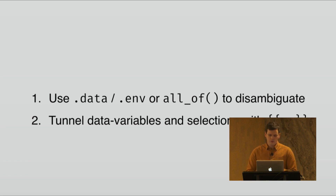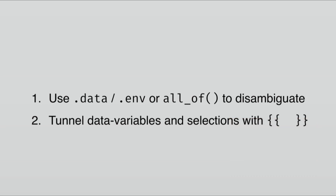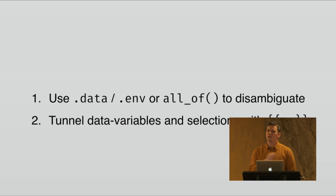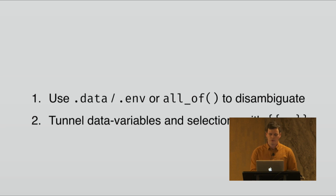So, those are the new features. To summarize: if you want to disambiguate data variables from environment variables, use the `.data` pronoun and `.env`. If you are using a selection function, use `all_of`. And in case you want to tunnel data variables and selections, you use the curly-curly operator. Thanks.